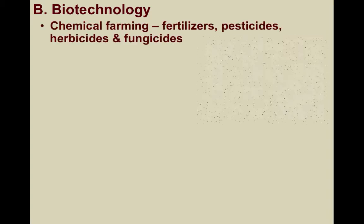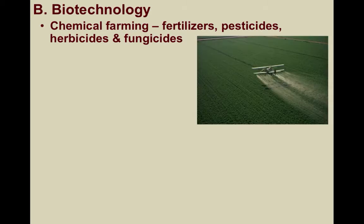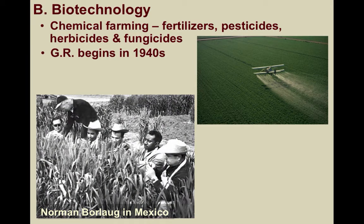More farmers began to rely on chemical farming, utilizing synthetic fertilizers derived mostly from fossil fuels such as petroleum, as well as synthetic pesticides, herbicides, and fungicides. Now enter Norman Borlaug, an American biologist and the father of the Green Revolution. He worked on developing hybrid varieties of wheat in Mexico in the 1940s and adapted these techniques to other crops.